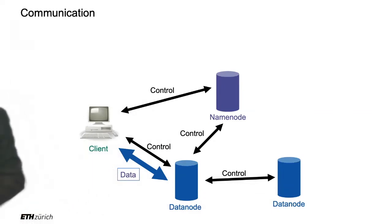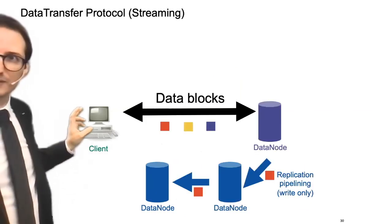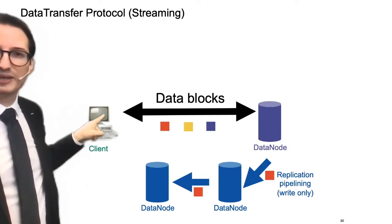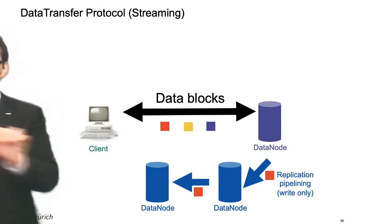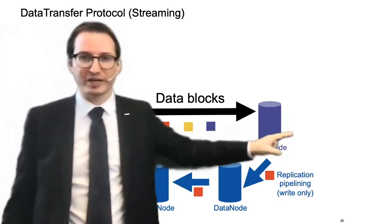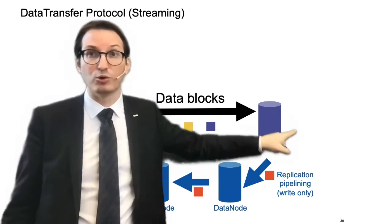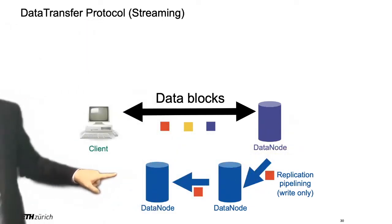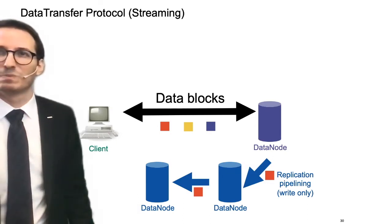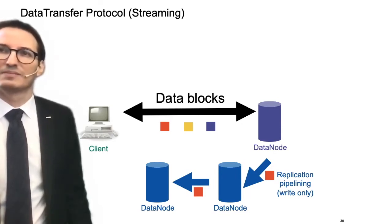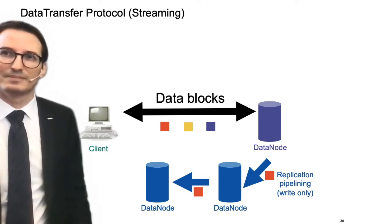The summary of all communication: most connections are control signals, and actual data is shipped between client and data nodes. The client receives three data node addresses and ships the block with the list of other data nodes so each knows which ones to forward to. When reading, the client connects to the first data node for each block, only falling back to the next one if the first fails.